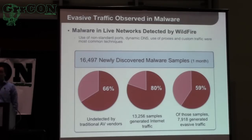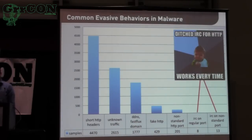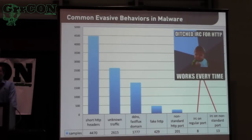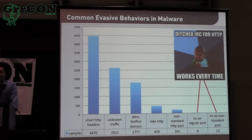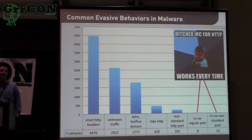Of that 80%, nearly 60% of malware samples exhibited what we'd call evasive traffic. Let's look at what evasive traffic looks like. Some of these aren't strictly evasive, but they're interesting. The first category — by far the most popular — is short HTTP headers. For those familiar with what HTTP headers look like, legitimate clients like web browsers and Java typically have long, very verbose HTTP headers. Most malware, however, has people pulling together quick HTTP-based command and control protocols with maybe only one, two, or three header fields — the bare minimum just to get traffic flowing.